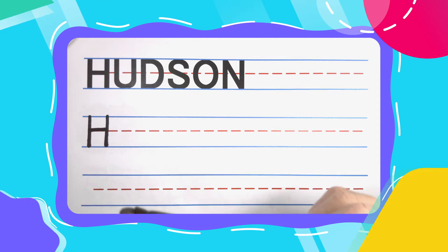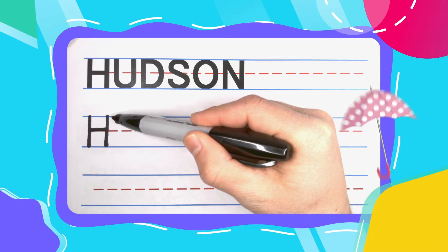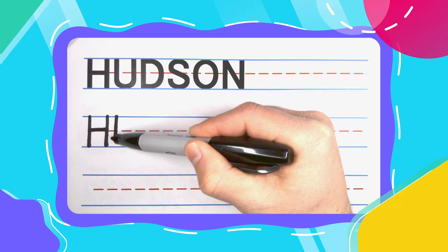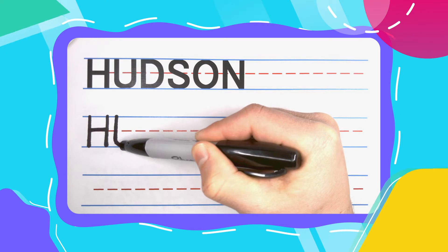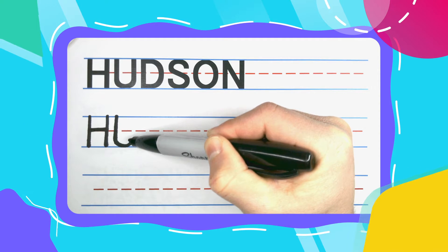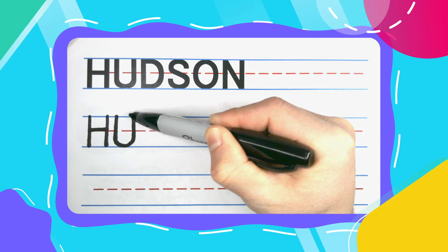The next letter in Hudson is a U. U start by going straight down, and right before you think you're going to go under, the bottom lines start to curve. Just touch that bottom line, come back up, curve, curve, curve, and then once you get about here, just come straight up for your U.